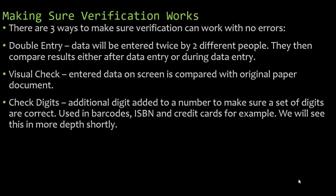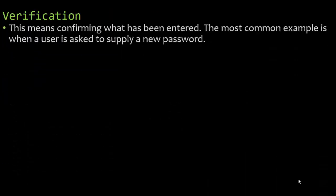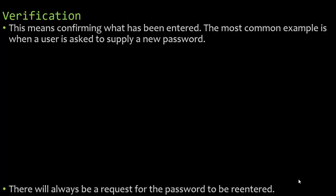A visual check means data on screen is compared with the original paper document. Check digits involve an additional digit added to a number to make sure a set of digits are correct. This is used in barcodes, ISBN numbers, and credit cards.